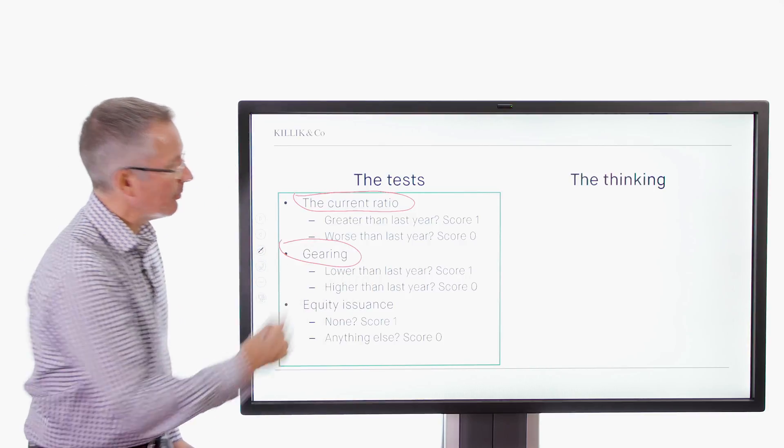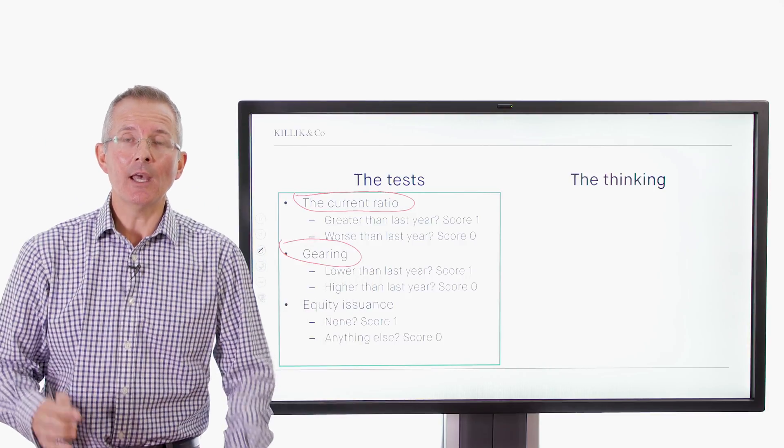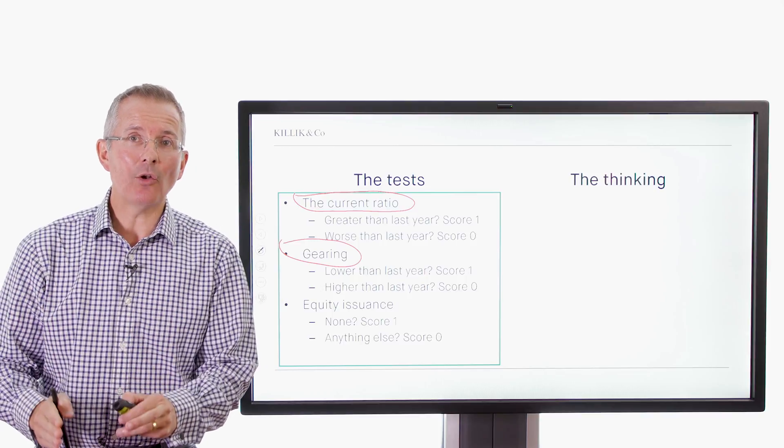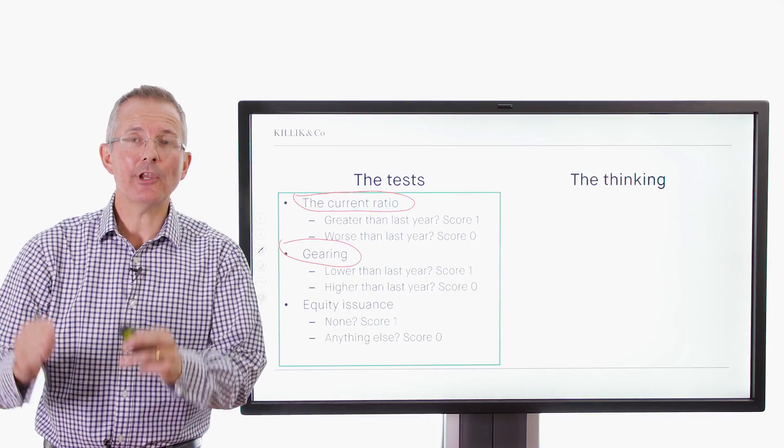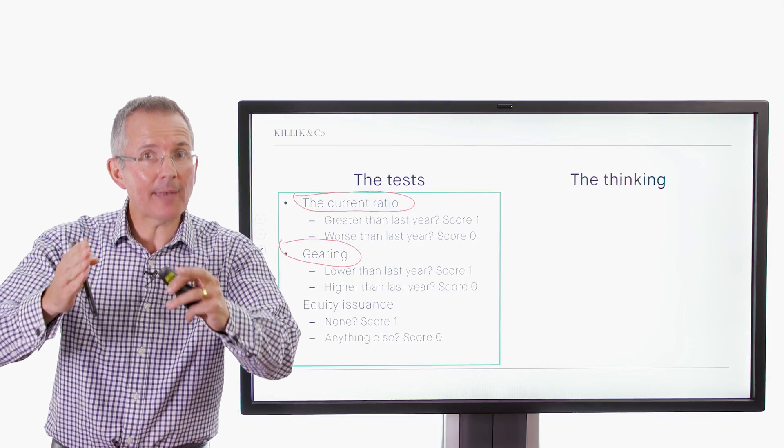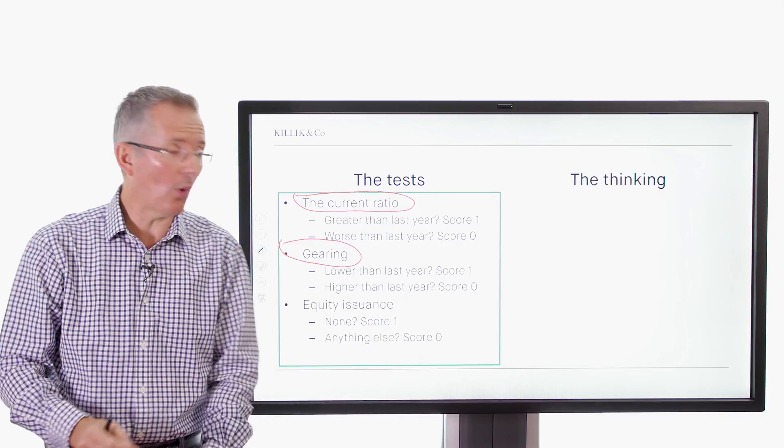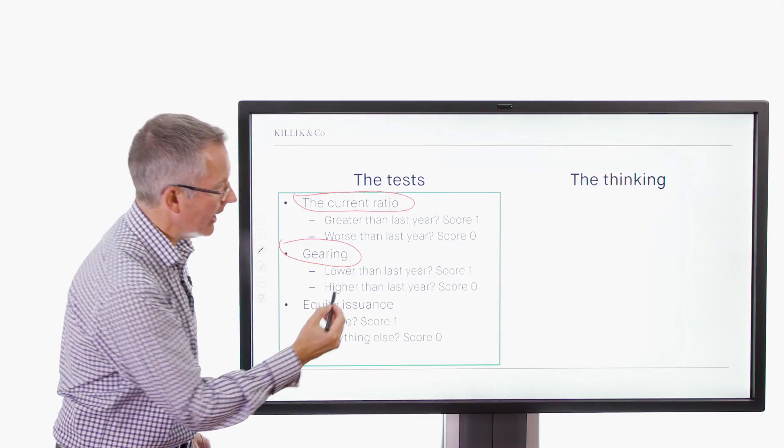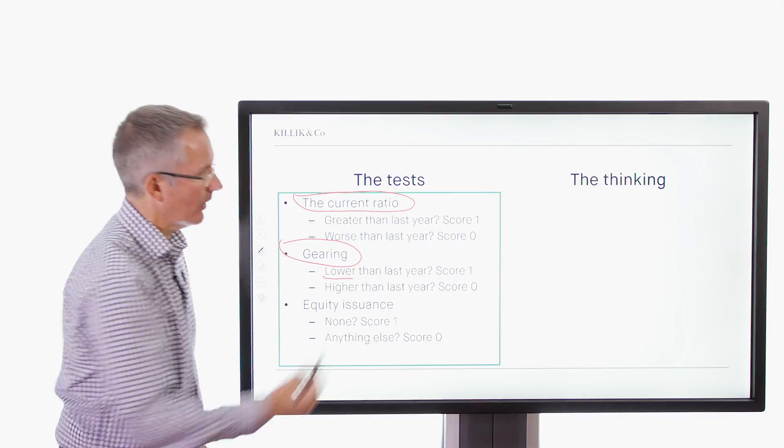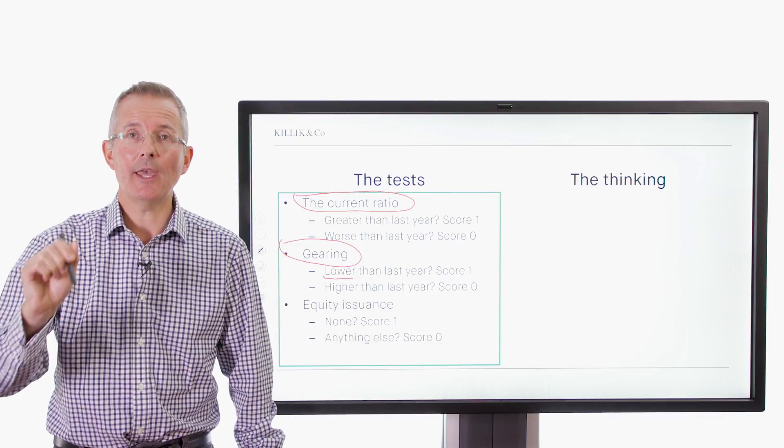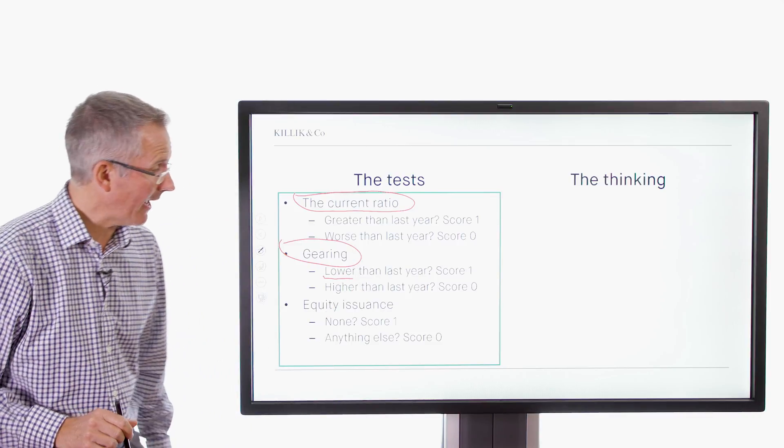Gearing. So that's looking at the relationship between debt and equity funding. Basically, the more debt you take on, Piotroski reckons, the riskier you are. Now, that's not universally accepted as an argument, but it's an important part of this score. So if gearing is lower than last year, score a point. If not, no points.